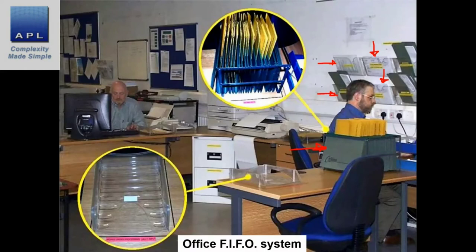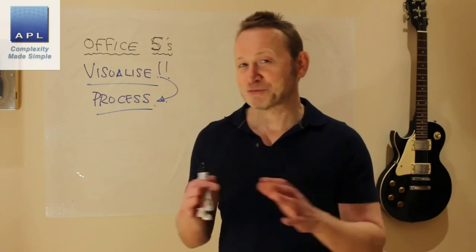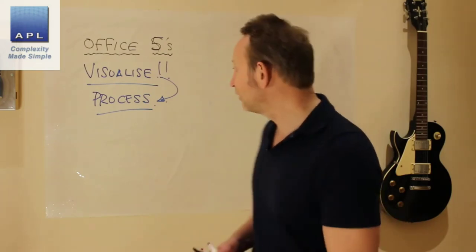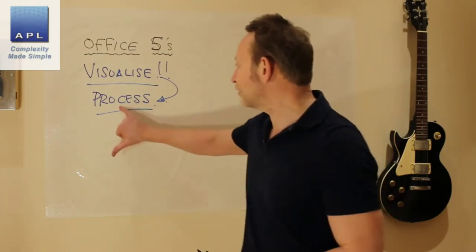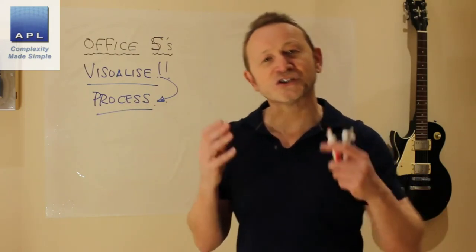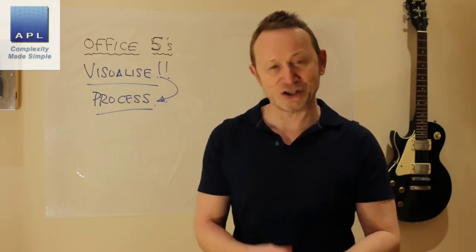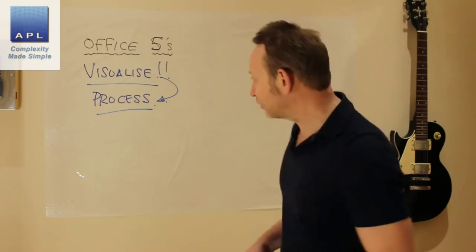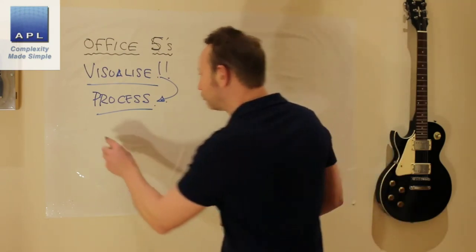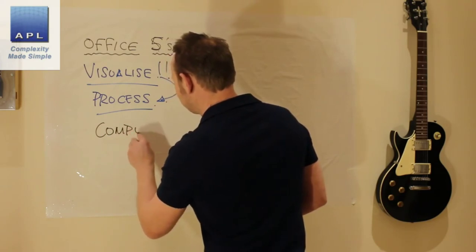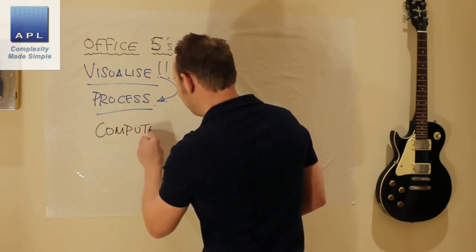There were some really great examples. Office 5S should be very simple, but the key thing is finding the process. Once you've found the process, visualize it and make it easy to see. One last pointer: where should you go and look for great 5S in the office?